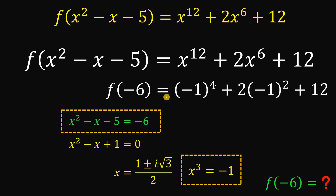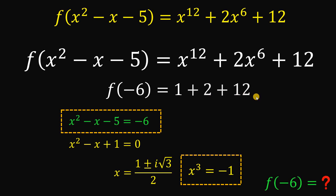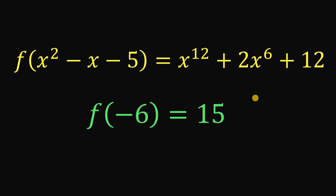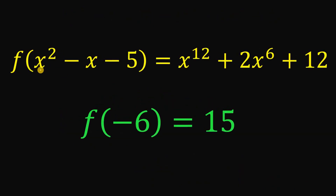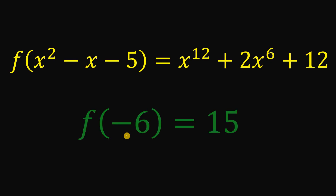Now, f(-6) equals (-1) raised to the power of 4 plus 2 times (-1) squared plus 12. Negative 1 to the power of 4 is 1. Negative 1 squared is 1, times 2 is 2. So 1 plus 2 plus 12 equals 15. Therefore, given f(x² - x - 5) = x¹² + 2x⁶ + 12, the numerical value of f(-6) is simply equal to 15.